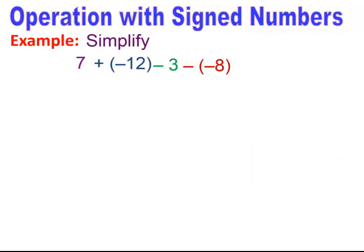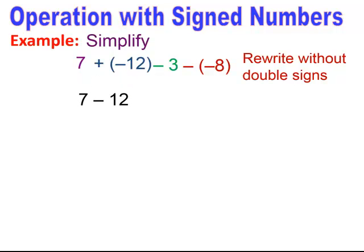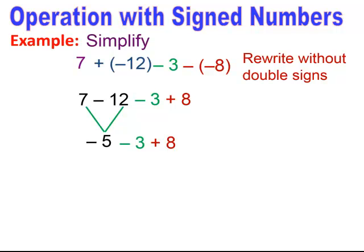For a multi-step arithmetic problem, the first thing you always want to do is rewrite the problem without the double signs. When you see plus minus, it changes to a minus, giving seven minus twelve. Bring down the minus three, and the double negative changes to a positive eight. Now doing arithmetic left to right: seven minus twelve — different signs — subtract and keep the sign of the higher number, giving negative five. Then negative five minus three — same sign — add and keep the sign, giving negative eight. Finally, negative eight plus eight equals zero.